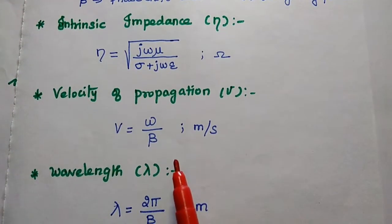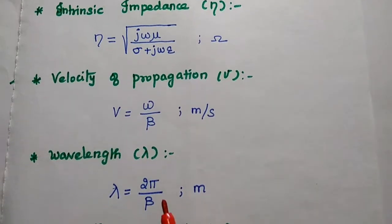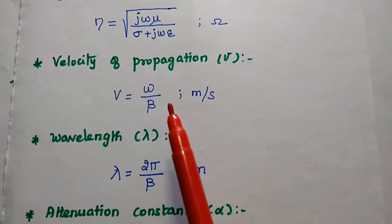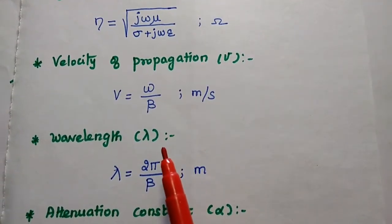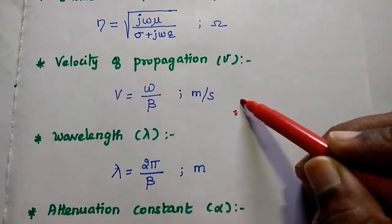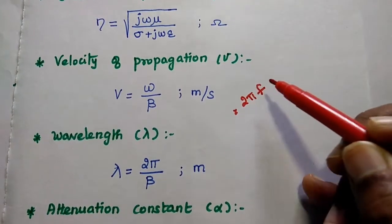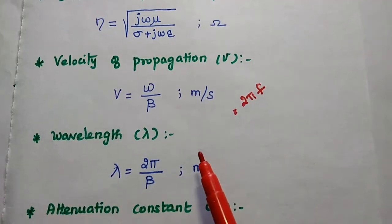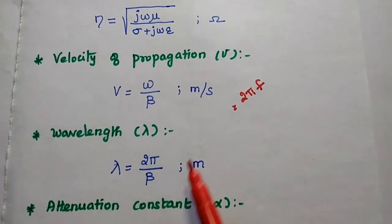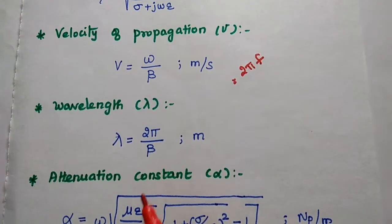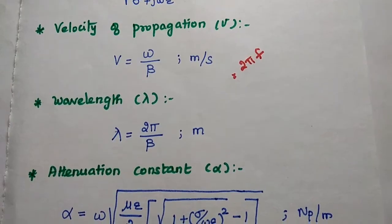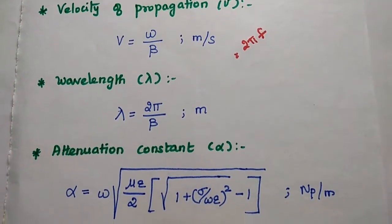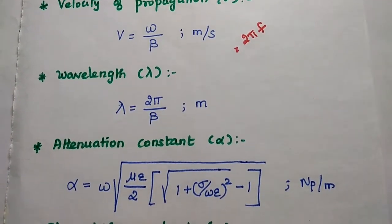Next, velocity of propagation V, that is equal to omega by beta, where omega is nothing but 2 pi f. Its unit is meter per second. Next, wavelength lambda is equal to 2 pi by beta. Its unit is meter.